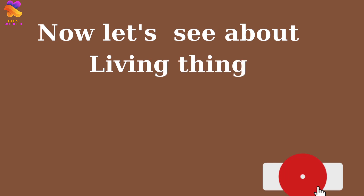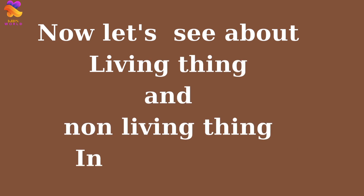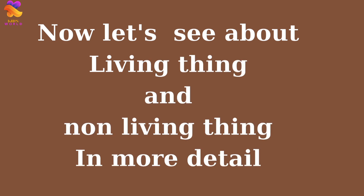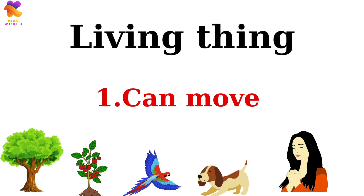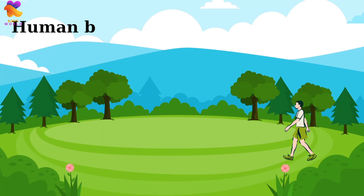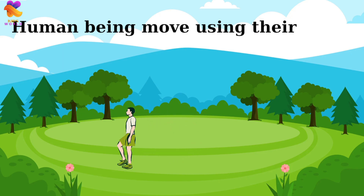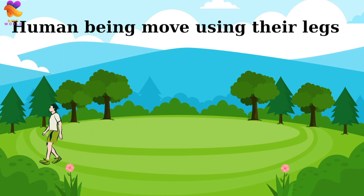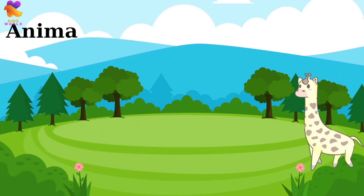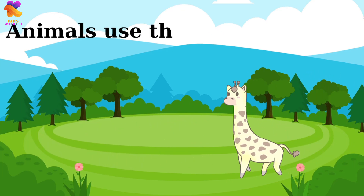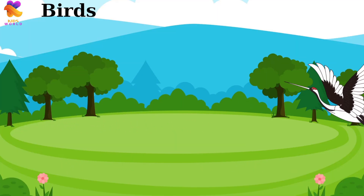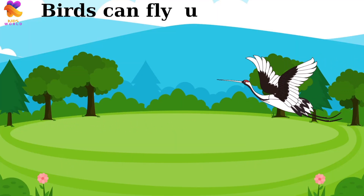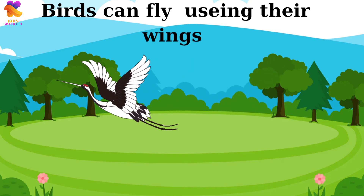Now let's see about living things and non-living things in more detail. Living things can move. Human beings move using their legs. Animals also use their legs to move. Birds can fly using their wings.